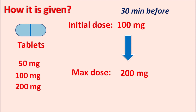Avanafil is a selective phosphodiesterase type 5 inhibitor indicated for the treatment of erectile dysfunction. It is selective and newer, and because of its fast onset of action it can be given 15 to 30 minutes before intercourse. Cardiovascular events should be carefully monitored when this drug is prescribed. It can produce vasodilatory side effects such as flushing, headache, and dizziness. The drug can be initiated at 100 mg, increased to 200 mg, or reduced to 50 mg based on patient condition.